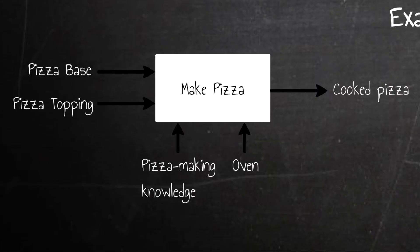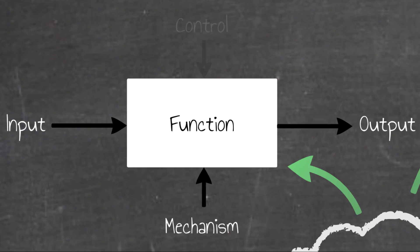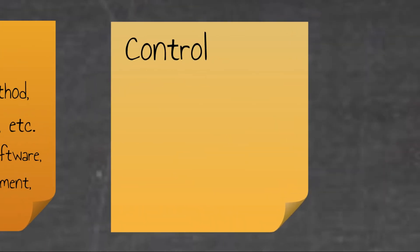We then have the concept of control, which is another arrow in the opposite direction to the mechanism arrow. In other words, a control feeds from the top of a function, and simply put, a control is something that guides, regulates, or constrains a function.